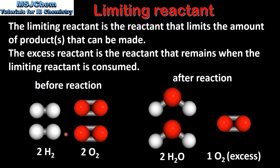In this example it's the hydrogen that's limiting the number of water molecules that can be produced. Therefore the hydrogen is the limiting reactant and the oxygen is the excess reactant. The excess reactant is the reactant that remains when the limiting reactant is consumed, and as you can see after the reaction we are left with one oxygen molecule.